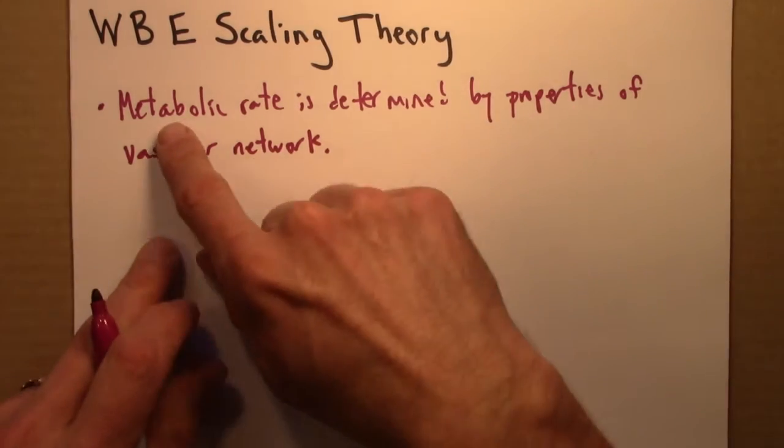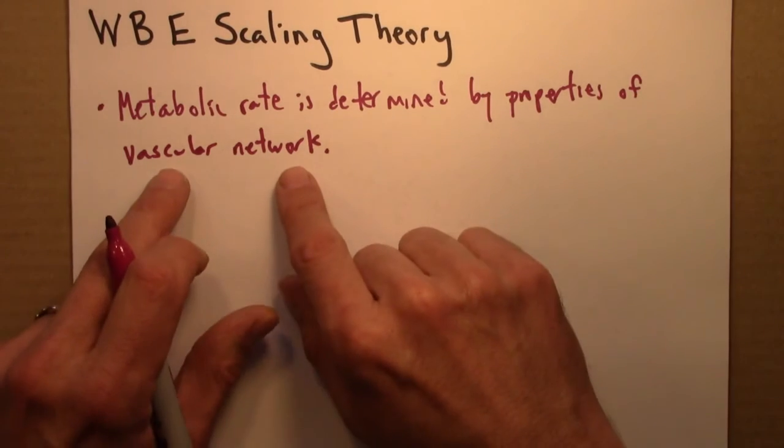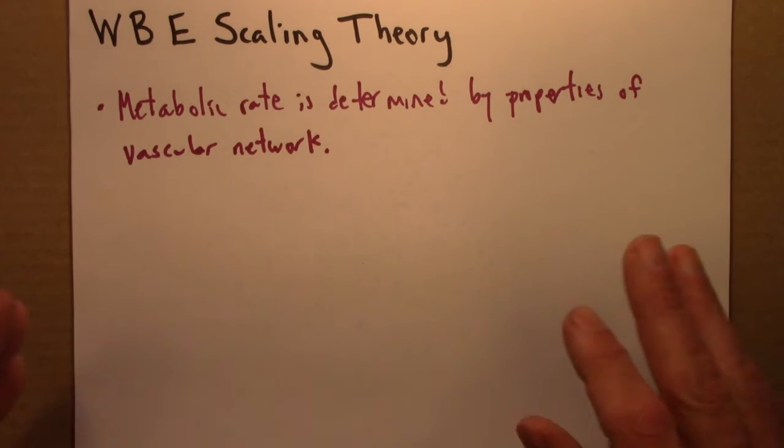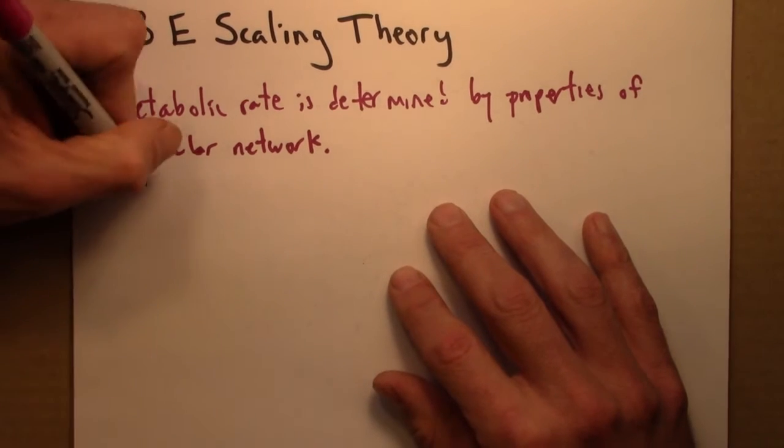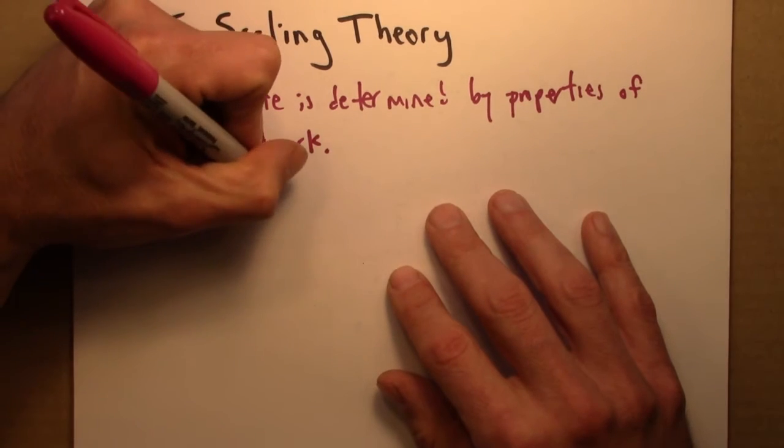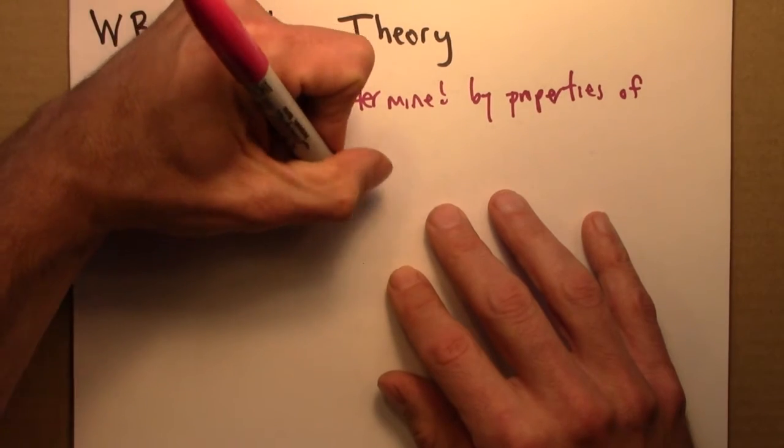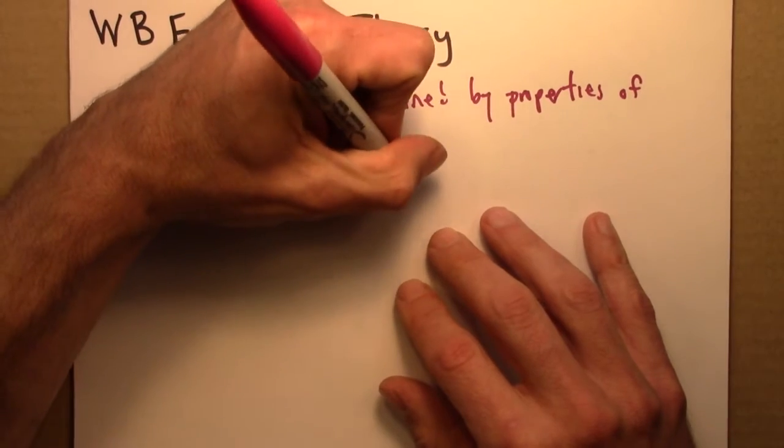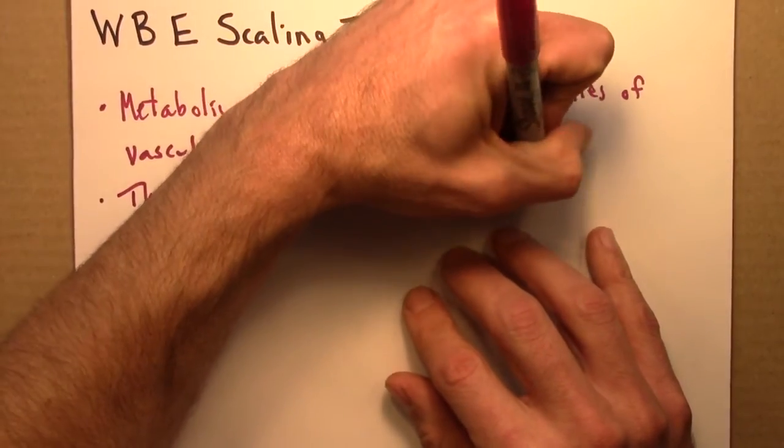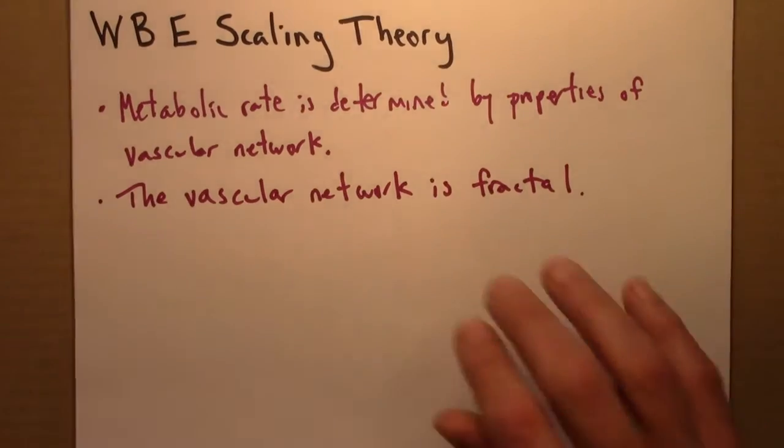And moreover, this vascular network, this system of arteries, is fractal. It's self-similar. So the vascular network is fractal.